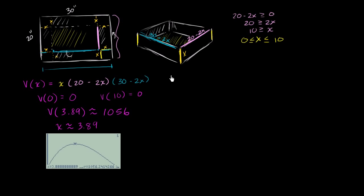So let's rewrite volume as a function of x. It's going to be x times, I'll multiply these two binomials first. So 20 times 30 is 600. Then I have 20 times negative 2x, which is negative 40x. Then I have negative 2x times 30, which is negative 60x. And then I have negative 2x times negative 2x, which is positive 4x squared.